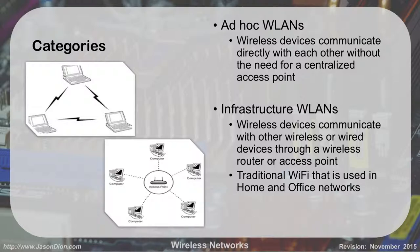There are two different modes we can operate our wireless network in: ad hoc mode or infrastructure mode. In ad hoc mode, devices connect to each other without a centralized access point. If you think about the Nintendo DS, kids can play directly between two DSs without any central access point — they won't get to the Internet, but they can play with each other. With infrastructure wireless networks, we go to a central point using that same star topology. Five computers access the central access point, and devices can communicate wirelessly or wired through the router or access point. This is traditional Wi-Fi used in home and office networks.